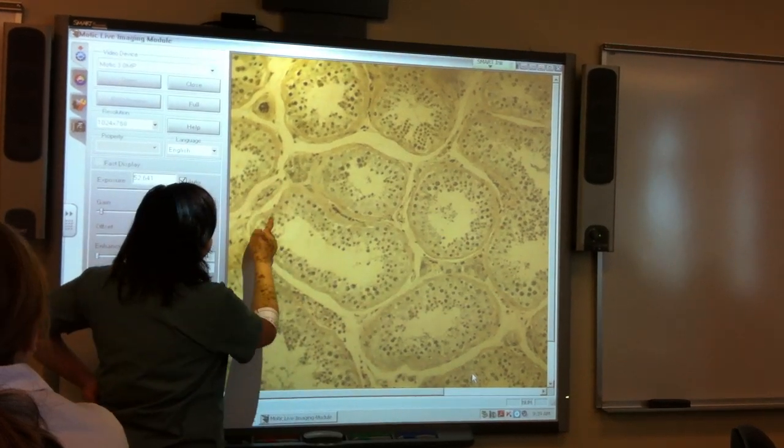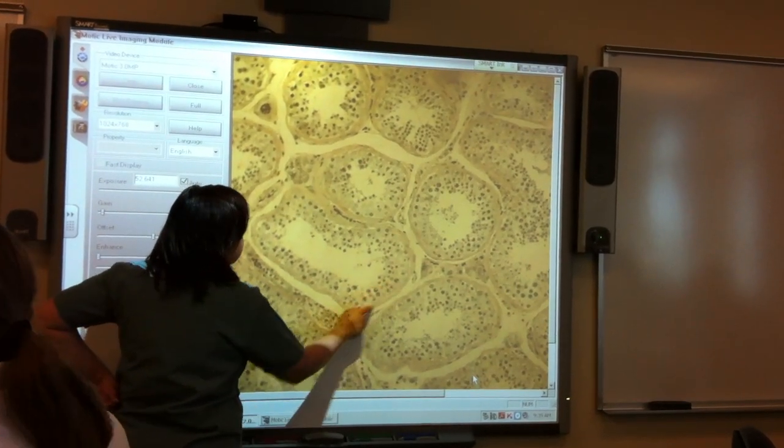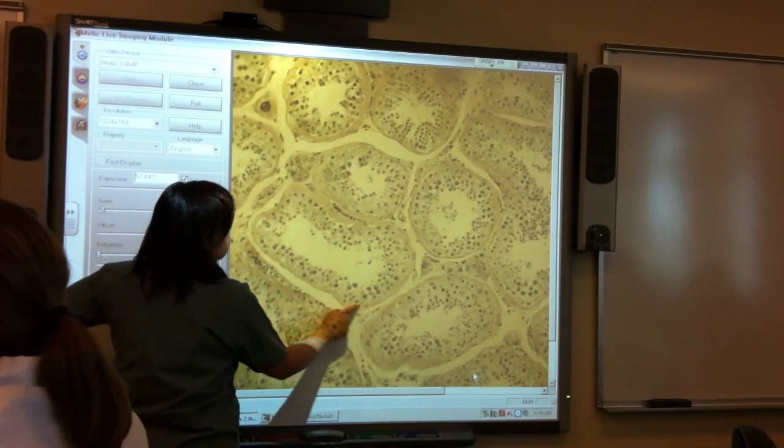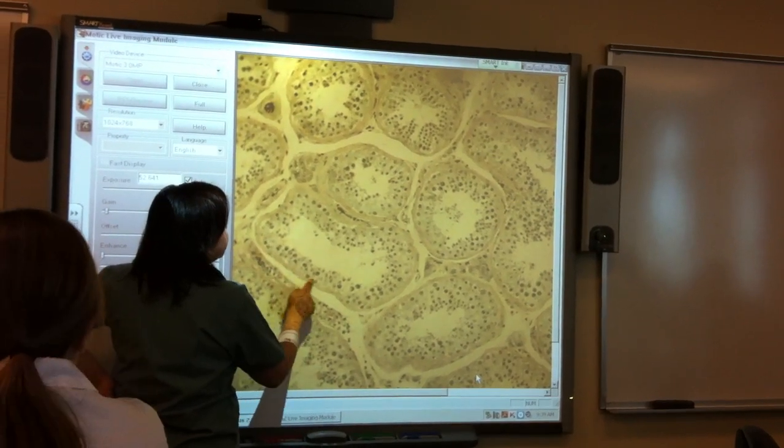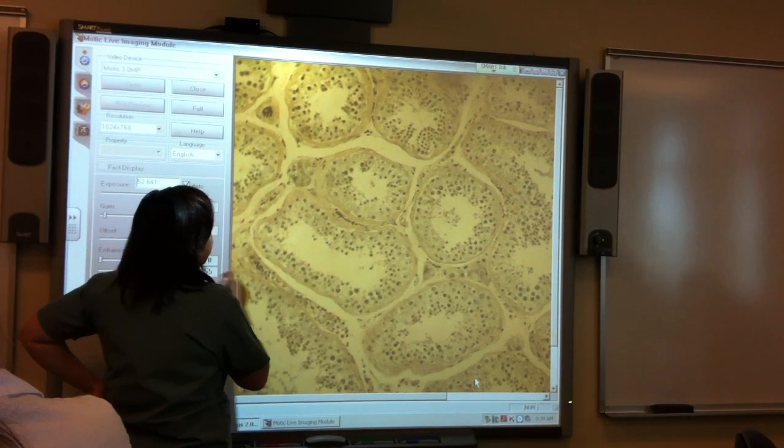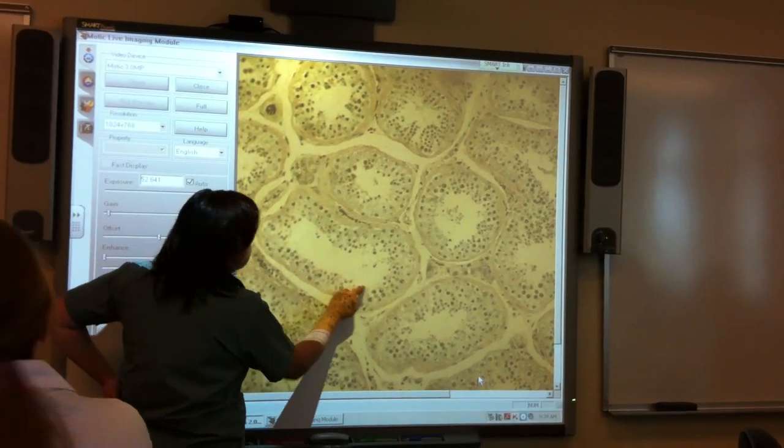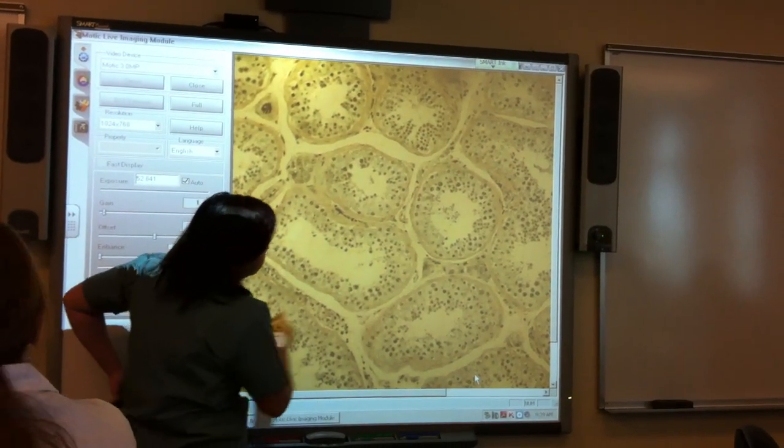Interstitial cells. The first ring of cells in the tubule is what cell? Spermatogonia. The innermost ring of cells? Spermatids. Spermatids, yep.